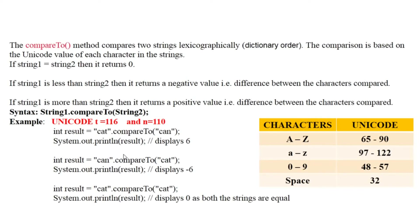Similarly, if we swap the strings — comparing 'can' as string one and 'cat' as string two — we get 'c' equals 'c', 'a' equals 'a', but now 'n' versus 't'. Here 'n' has Unicode 110 and 't' has Unicode 116. Therefore the first string is less than the second string, so it will return a negative value: minus 6.